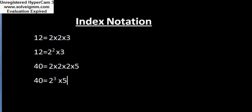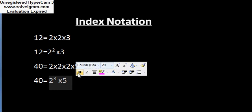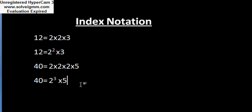As you can see, 2 is repeating 3 times, so you can write 2 raised to power 3. Similarly, 5 is repeating only one time, so you will take 5 as it is. So this form is called the index notation form.